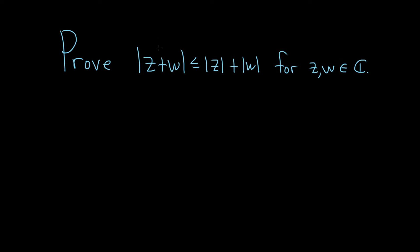To do this we're going to show that if you take the modulus of z plus w and you square it, it's less than or equal to the quantity modulus of z plus modulus of w, all squared. We're going to show that this is true and then it'll follow simply by taking the square root of both sides.